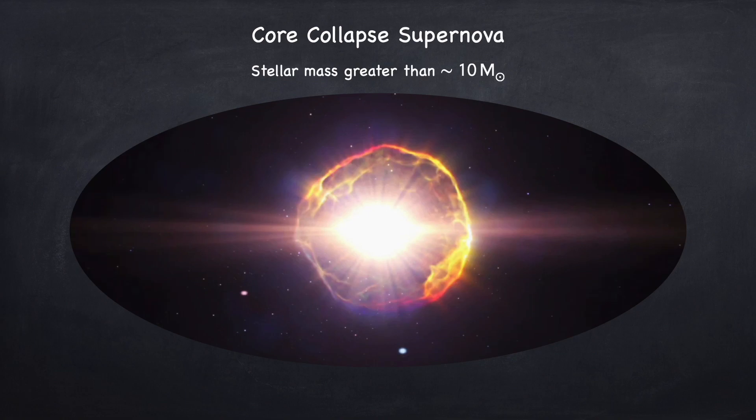And it is thought that supernovae are one of the possible places where R-processed nucleosynthesis takes place in the universe. R-processed nucleosynthesis I covered in stellar physics 5H. This is one of the main mechanisms for making nuclei beyond iron.